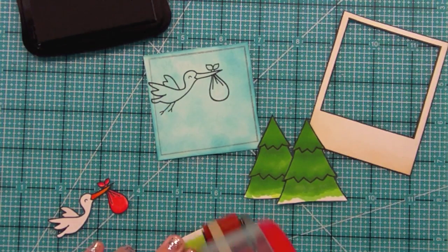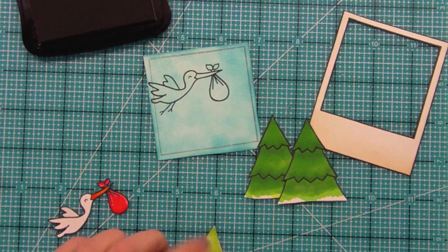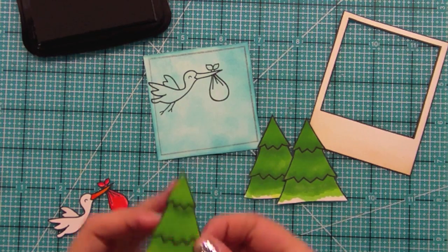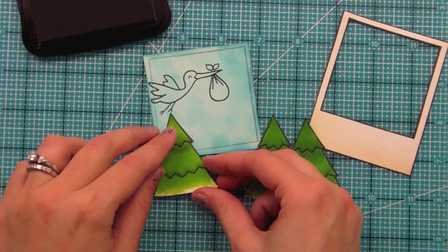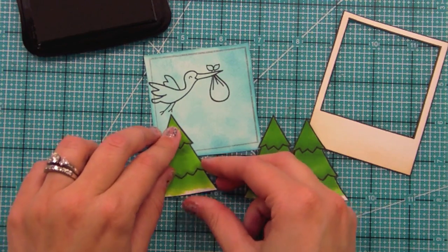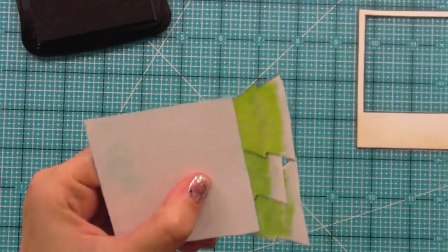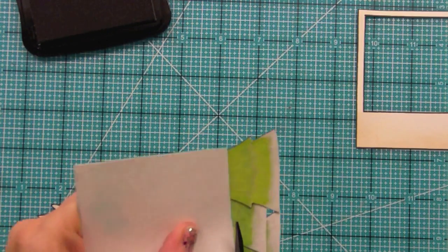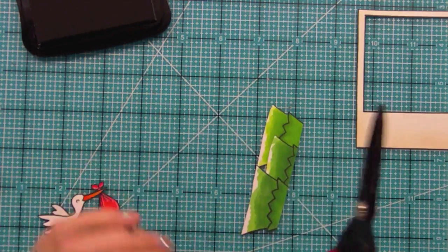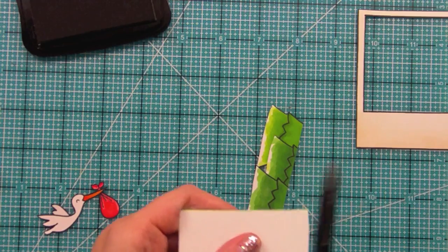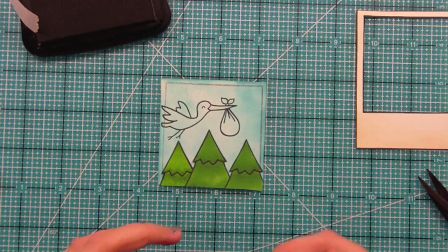Now I'm just going to use some regular old tape runner to position my trees in kind of a staggered fashion. That way it looks like this kind of cool forest that the stork is going over. I just love creating fun little scenes like this. Now I've got all of my trees down, and I'm just going to trim them off. I colored a little too much, but I really didn't know exactly how tall I wanted my trees to be in the Polaroid, so I figured it was better safe than sorry to color some more in, and then it's easy to just trim it off.